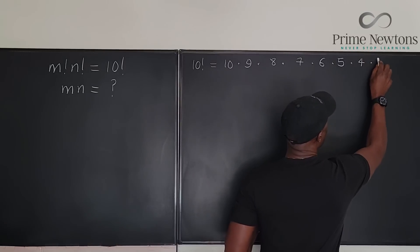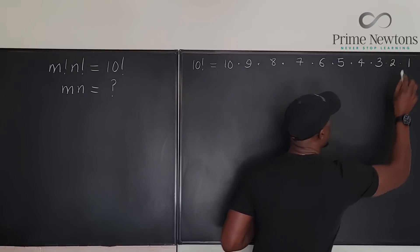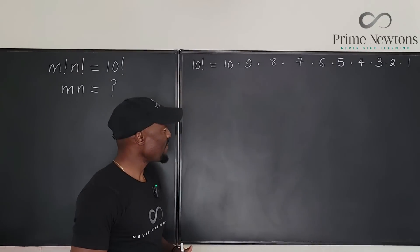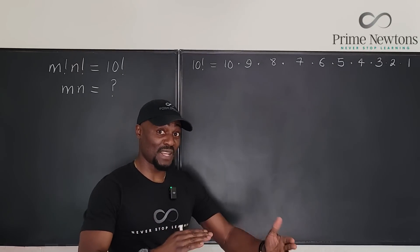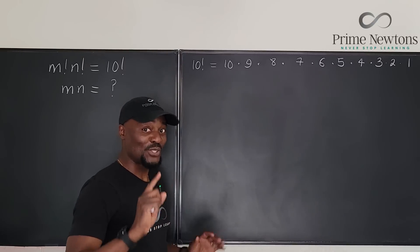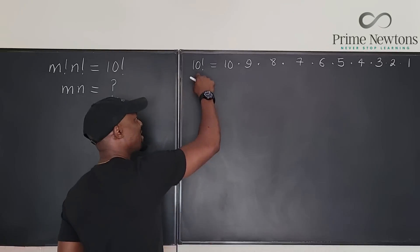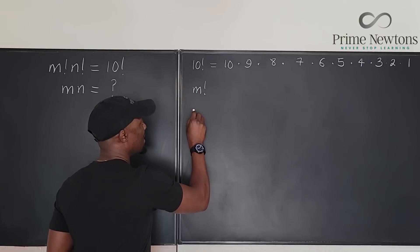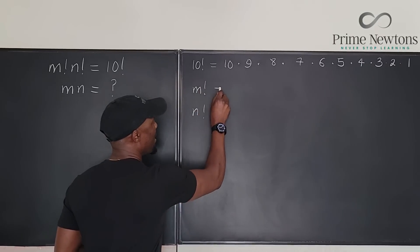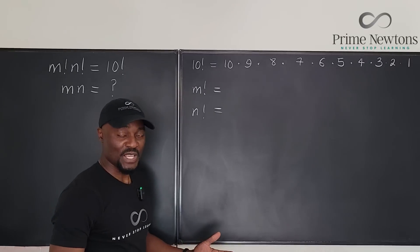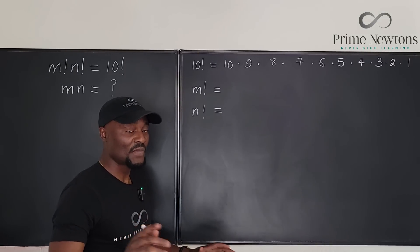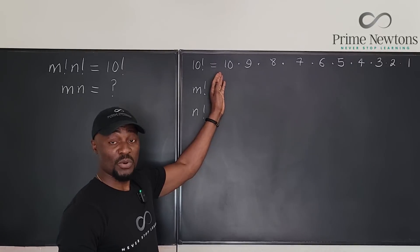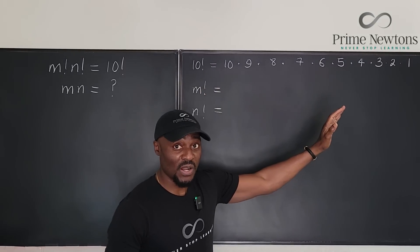...times 3, 2 and 1. That's 10 factorial. Now remember that every factorial will have to build up. So my strategy in this case is to say this 10 factorial is the same thing as m factorial times n factorial, but we don't know what m factorial is. But one thing we're sure of is that you can build your factorials from 1 up to the number or from the number all the way to 1.